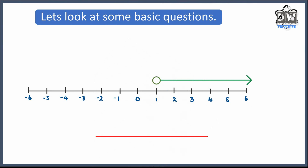Let's look at some basic questions. Here's a number line with an inequality shown on it, and what we've got to do is write that inequality down. Basically, x will fall somewhere along this line — or beyond, because there's no stopping point. So x is greater than 1. Notice how the circle is not shaded in — if it were shaded in, it would mean equal to. So x is bigger than 1. It really is as simple as that.